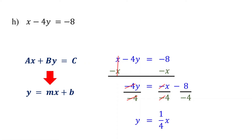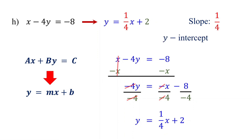Negative 8 divided by negative 4 is 2. Now the equation is in slope-intercept form, and you can see that the slope is 1/4, and the y-intercept is (0, 2). To learn how to graph a linear equation using the slope and y-intercept, check the link in the description. Give it a thumbs up and consider subscribing.